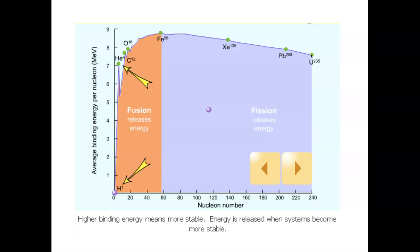In nuclear fission, an unstable overcrowded nucleus with lower binding energy splits into fragments — like barium or xenon. Those two fragments are more stable. The energy difference between uranium's position on the binding energy curve and the positions of its fragments — say xenon or lead — represents the nuclear energy released. The fragments sit higher on the curve (more stable, greater binding energy), and that jump in binding energy is the energy released.